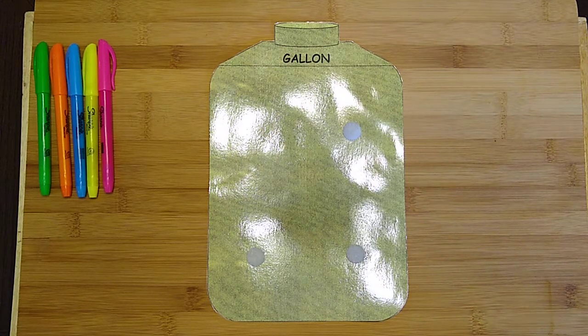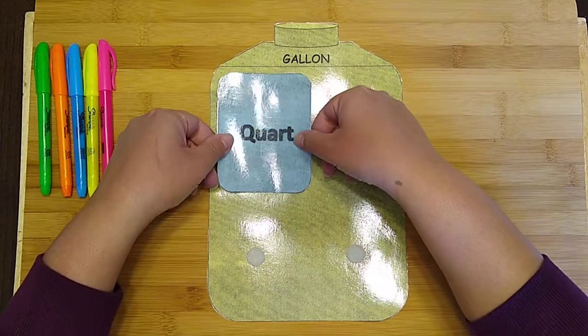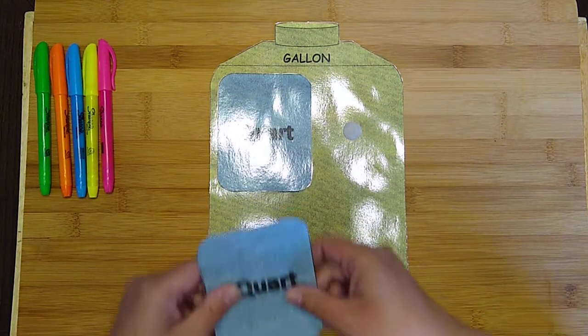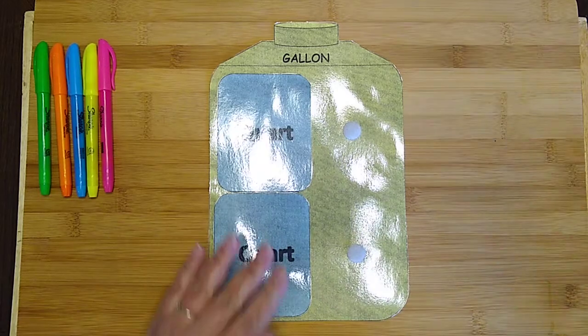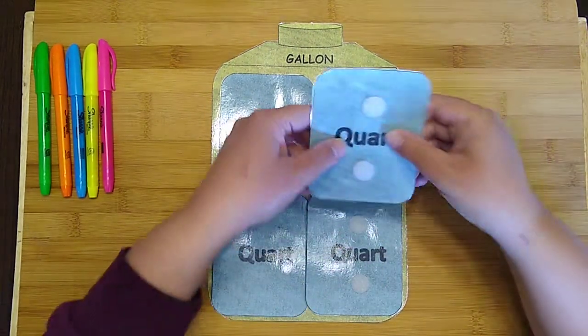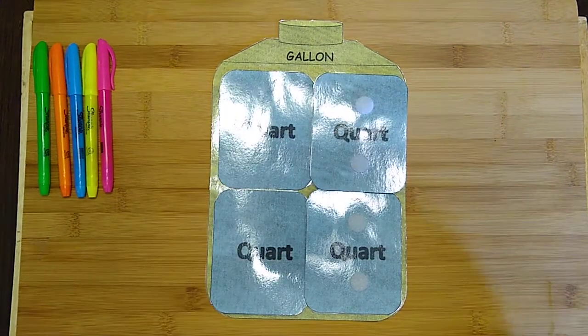So in a gallon we have four quarts. You can fit four of these inside of a gallon. This is going to be important to remember for when we do our conversions.